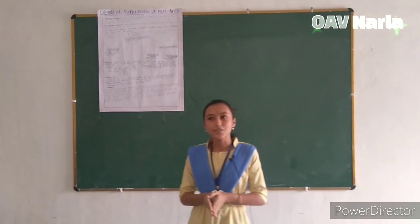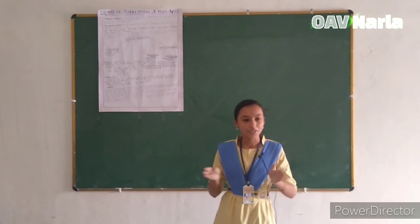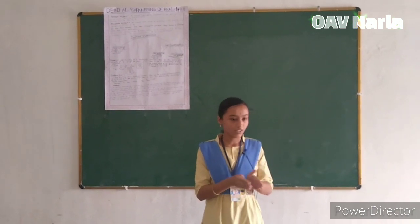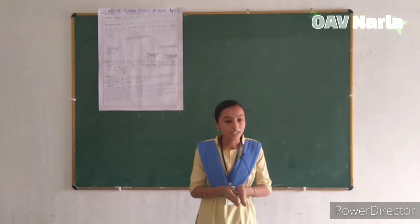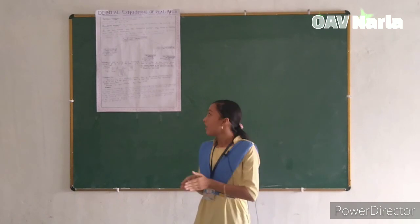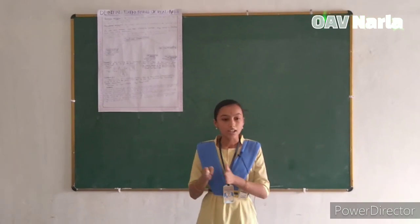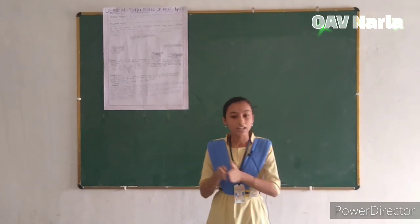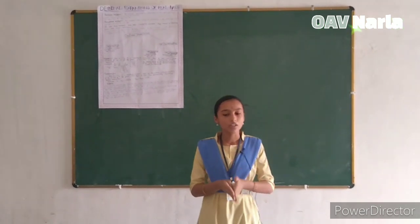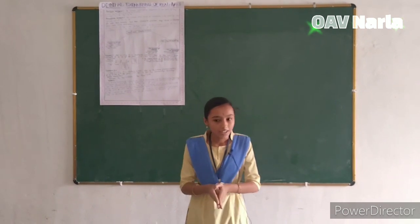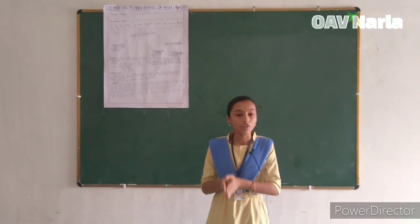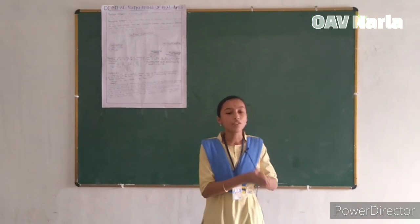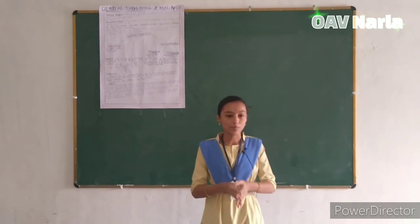But in case of root 2, it is completely different. We cannot write root 2 in the form of p by q as it is an irrational number, and its decimal expansion is also non-terminating, non-repeating. It means the decimal expansion of root 2 is neither terminating nor repeating. From here we conclude that rational numbers will have terminating and non-terminating repeating decimal expansions, and irrational numbers have non-terminating, non-repeating decimal expansions.